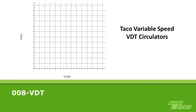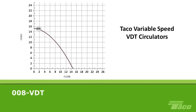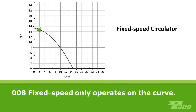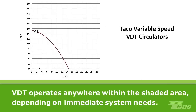That brings us to Tayco variable-speed delta-T circulators, which are different from all the pumps we've talked about so far. Here's the curve for the 008 VDT. It looks the same as the curve for any fixed-speed circulator, but you read it very differently. A Tayco VDT circulator operates on its own curve, just like every other pump, but it also operates at any other point below the curve depending on the needs of the system. In contrast, the 008 fixed-speed pump can operate only at points along its curve, not above or below it. The pump has no choice but to operate on its curve, regardless of what head and flow the system needs at any given moment. But the VDT variable-speed pump can and does operate anywhere within the shaded area, depending on the specific, immediate flow and pressure needs of the system.